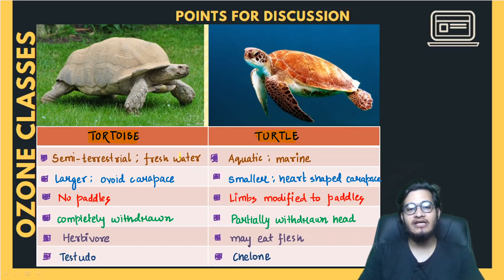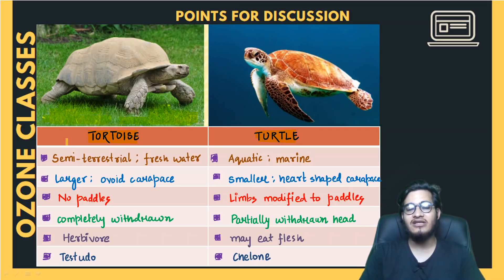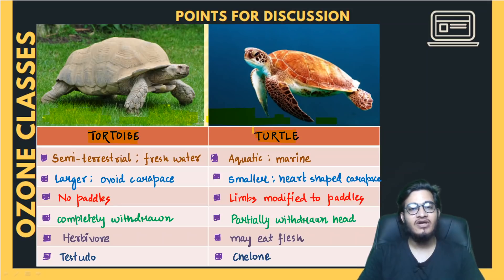The tortoise is present on land — it is majorly terrestrial in its habitat. It prefers to stay on land. But if you talk about the turtle, it is visible in water — it is aquatic and prefers to live in water. Water is always its first priority.